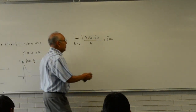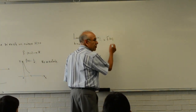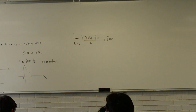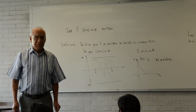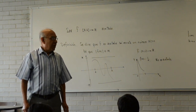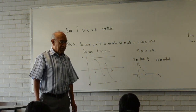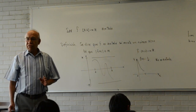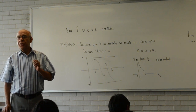Si una función es diferenciable en X, ¿qué cosa es la derivada de F en X? Es un límite, y ese límite, si existe, es un número. Por lo tanto, la derivada de una función es un número. Es importante que quede claro que la derivada de una función real de variable real, diferenciable en un punto, es un número real. Y la derivada de una función es otra función.